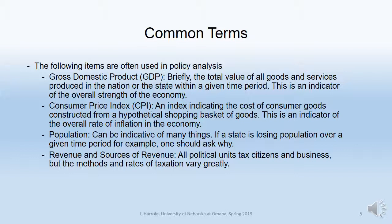CPI, the consumer price index, is an index that indicates the cost of consumer goods constructed from a hypothetical shopping basket of goods. It is an indicator of the overall rate of inflation in the economy. The difference between CPI and GDP is that CPI is an index, whereas GDP is a real number expressed in dollar figures, calculated from very complicated calculations.